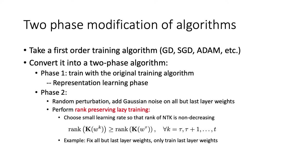In the second phase, you do a random perturbation to add Gaussian noise on all but the last layer weights. Then you perform so-called rank-preserving lazy training. It is a generalization of the previous NTK regime training, where you need to choose a small enough learning rate so that you guarantee the rank of NTK does not decrease over time.